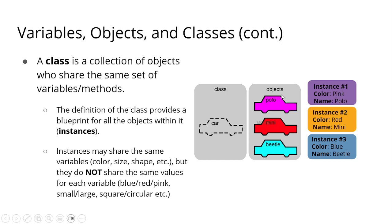Our object has instances. The first instance has a color name of pink and a name of Apollo. In instance 2, it is color red and its name is Mini. The third is color blue and the name is Beetle. The definition of the class provides a blueprint for all the objects within it — that's what we call instances.